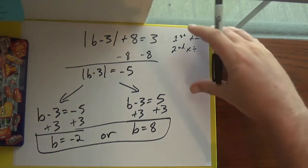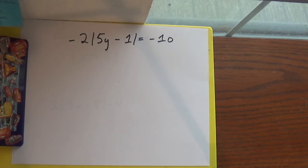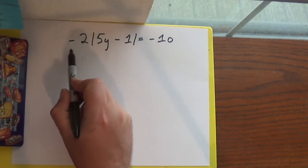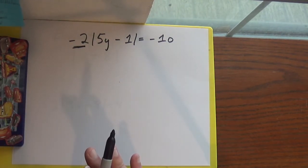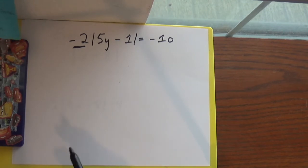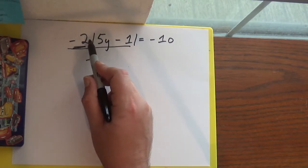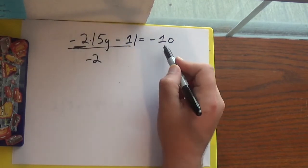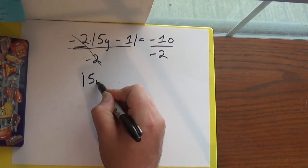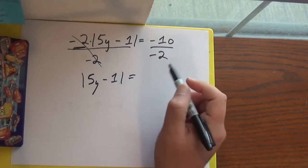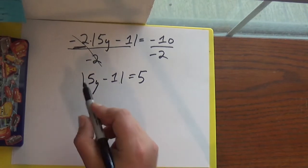We should always have two answers. Now in this next case I've got something in front of my absolute value, so I've got to get the absolute value alone before I can break it into the two cases. To get rid of it I'm going to divide both sides — because this is this times that, so to do the opposite I divide. These cancel, my negatives cancel, and 10 divided by 2 is just 5. Now I'll break it into the two cases.